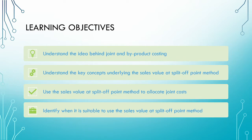In this video, we will begin by revising the basic idea behind joint and byproduct costing. We will then understand the key ideas behind the sales value at split-of-point method. Once we have understood these key ideas, we will look at a practical example in which we allocate the joint costs to the joint products. From this example, we will see the advantages and disadvantages of the method and conclude by discussing under what circumstances this method is suitable.